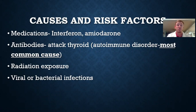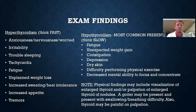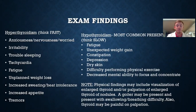Thyroiditis typically has a strong family hereditary connection. Exam findings include hyperthyroidism and hypothyroidism symptoms, which are normally very subjective. For hyperthyroidism, think symptoms associated with a fast or sped-up metabolism. For hypothyroidism, think slowed-down metabolism. Physical findings may include visualization of an enlarged thyroid or palpation of nodules, and the patient could present with a goiter causing difficulty swallowing or breathing. The thyroid may or may not be painful.